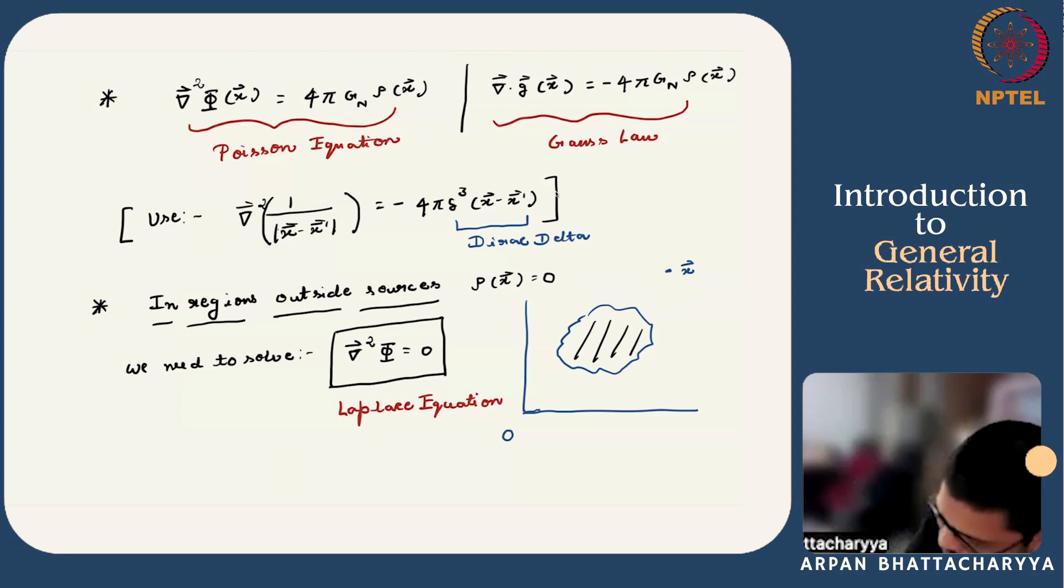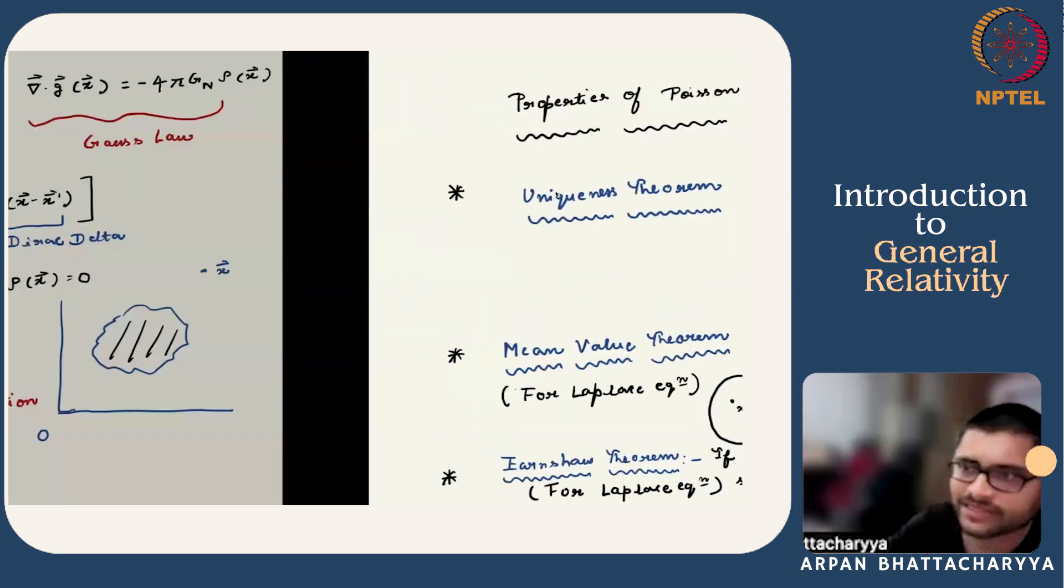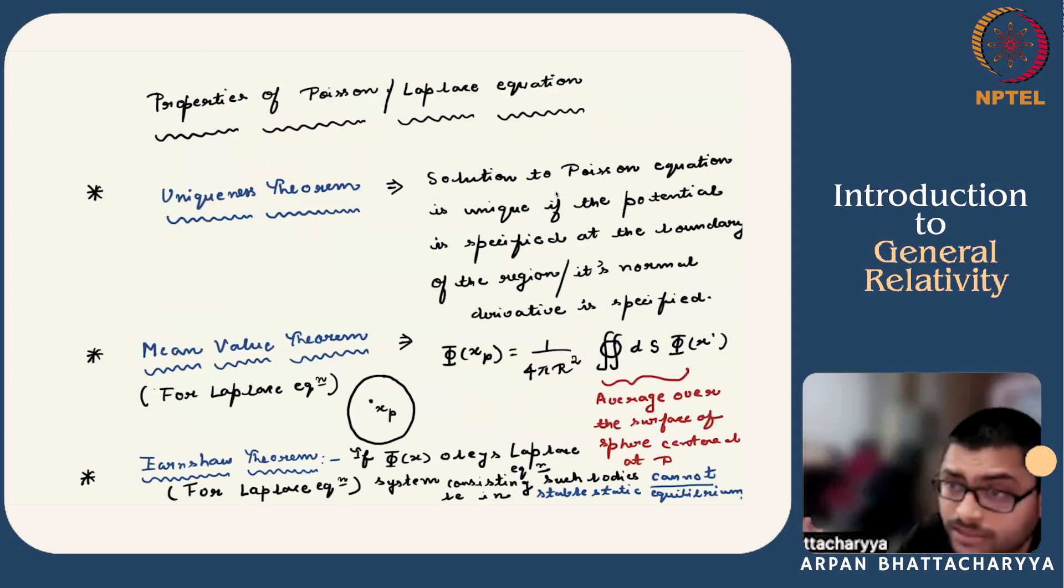These important properties we can summarize by three theorems. First is the uniqueness theorem. Suppose you want to solve the Poisson equation in a bounded region, then the solution is unique if the potential is specified at the boundary. You have to specify it at every point on the boundary of the region, or you have to specify its normal derivative at each point at the boundary. In the former case, it is called the Dirichlet boundary condition, and in the latter case, it is called the Neumann boundary condition. Given one of these boundary conditions, you get a unique solution.